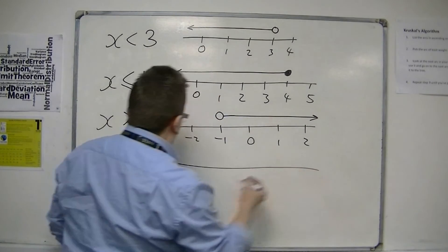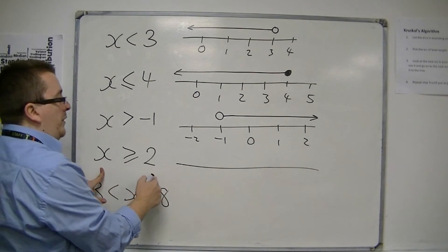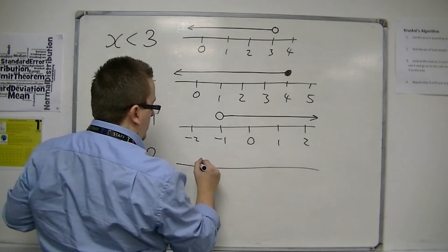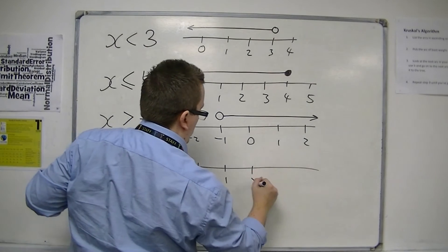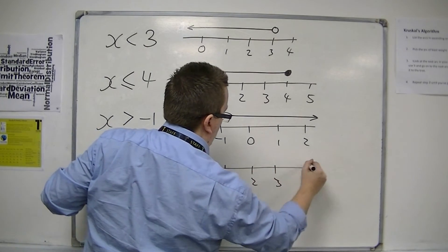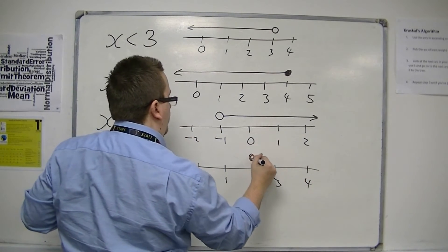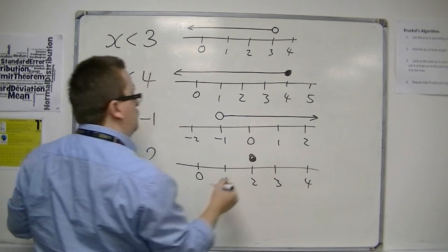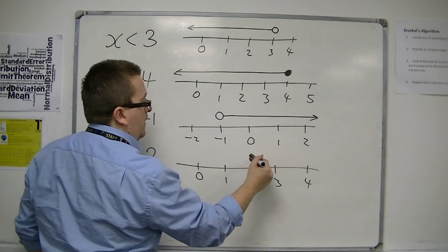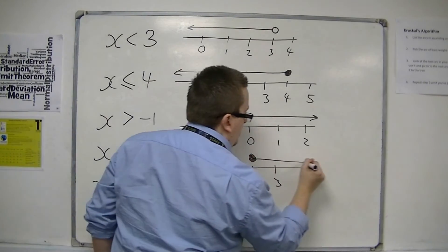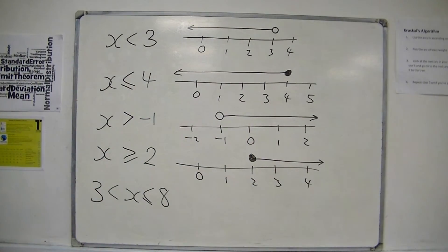So if I'm saying that x is greater than or equal to 2, then I use a solid dot rather than a hollow one, and still pointing towards the right.